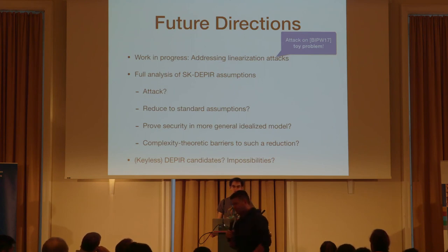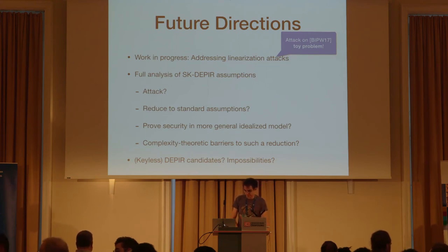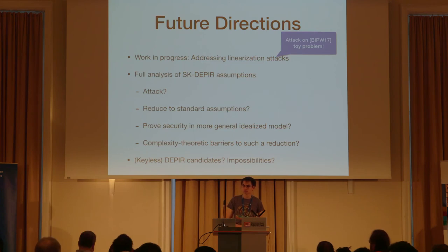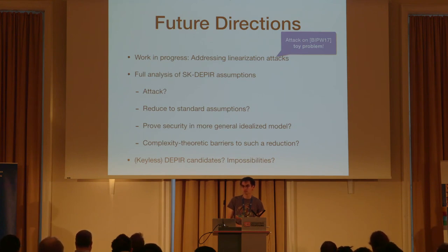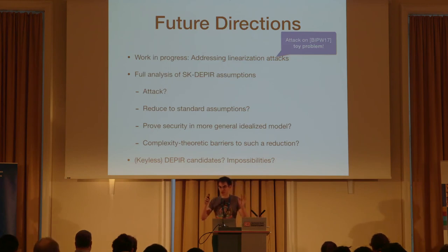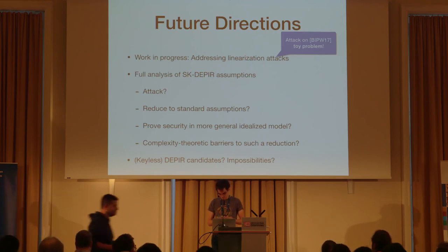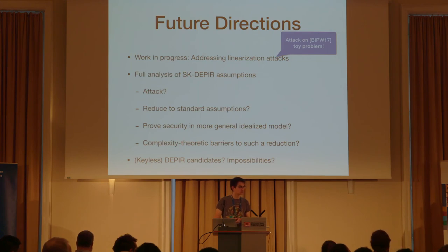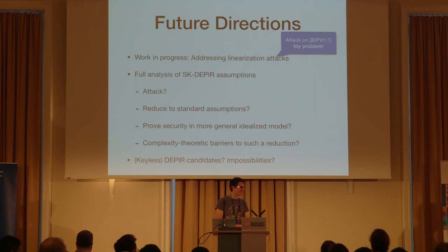Questions for Justin? One thing you could consider — maybe you did already — is to not just ask about points on the curve but also add some dummy points, which intuitively is like adding noise, useful in many settings. Does your attack work on a noisy version of the toy problem? That's a great question — we're definitely thinking about the effect of noise. We don't have anything definitive, but our attack doesn't work when you add noise. Have you thought about other applications of these assumptions — are they useful for building other things? I have no other applications that I'm aware of.